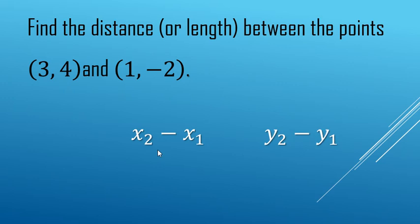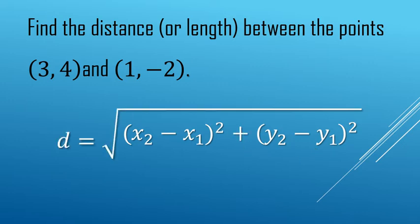So distance formula: difference in x's, and difference in y's. After you've found those, you're going to square both those differences and then add the two squares together. After you've found that sum, you're going to square root the whole thing.